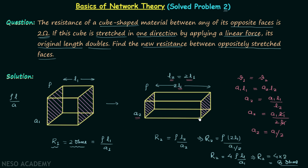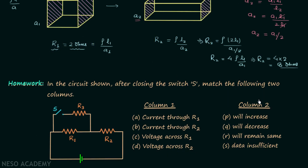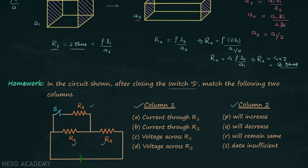Now we will move to our homework problem. We have a circuit with three resistors. When switch S is open, no current flows through R3, but when switch S is closed, current flows through R3. You are required to match column 1 with column 2, keeping in mind the changes happening in the circuit after closing switch S. Think about the scenario before and after closing the switch, and post your answer in the comment section.